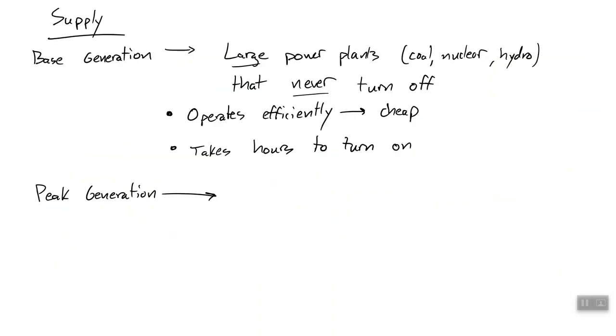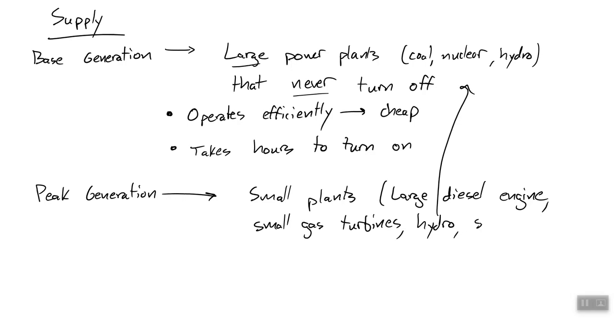And so we have peak generation facilities, which are small power plants, things like very large diesel engines, think like the giant engine on an aircraft carrier strapped to the ground. Or small gas turbines, things that aren't combined cycle, but just a single gas turbine, less efficient, easier to turn on. Hydro, even though it's kind of a large plant, you can turn it on and off fairly easily and quickly. Then also energy storage, which you can bring online really fast.